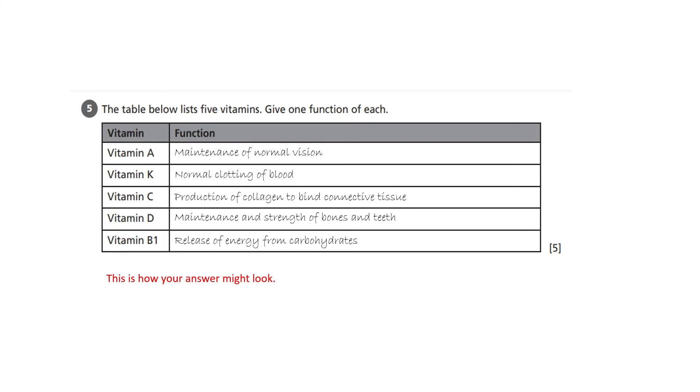So my answer for this question: Vitamin A - maintenance of normal vision. Vitamin K - normal clotting of blood. Vitamin C - production of collagen to bind connective tissue. Vitamin D - maintenance and strength of bones and teeth. Vitamin B1 - release of energy from carbohydrates.